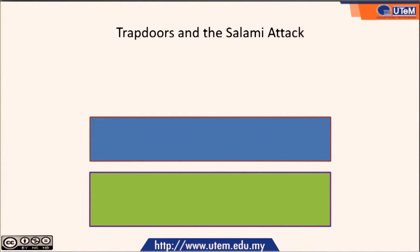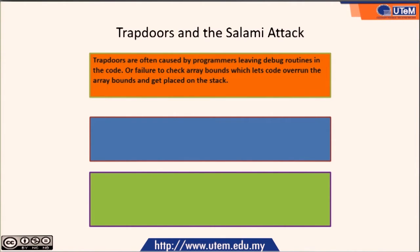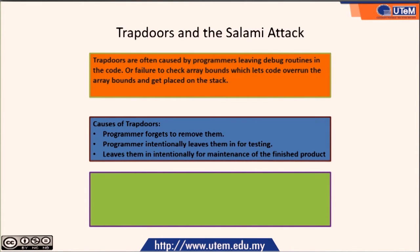The next type of malicious code is trap doors and the Salami attack. Trap doors are often caused by programmers leaving debug routines in the code, or by failure to check array bounds, which lets code overrun the array and get placed on the stack. The cause is normally because a programmer forgets to remove them, intentionally leaves them in for testing, or leaves them in for maintenance of the finished product.